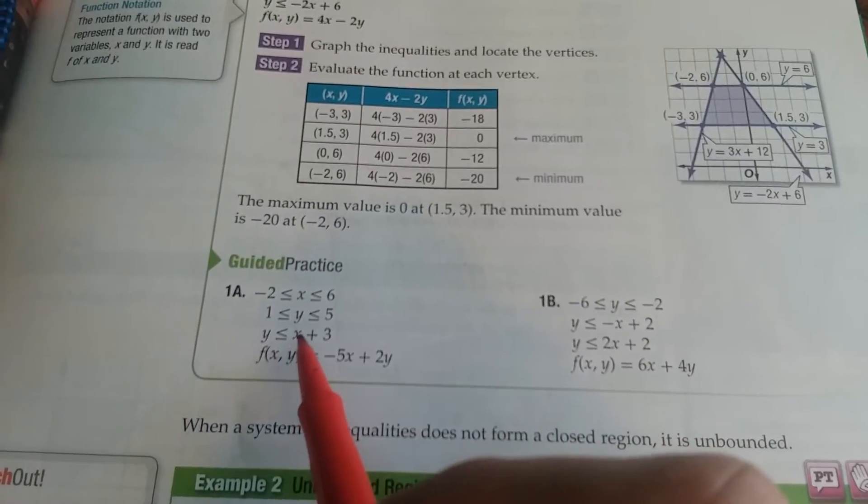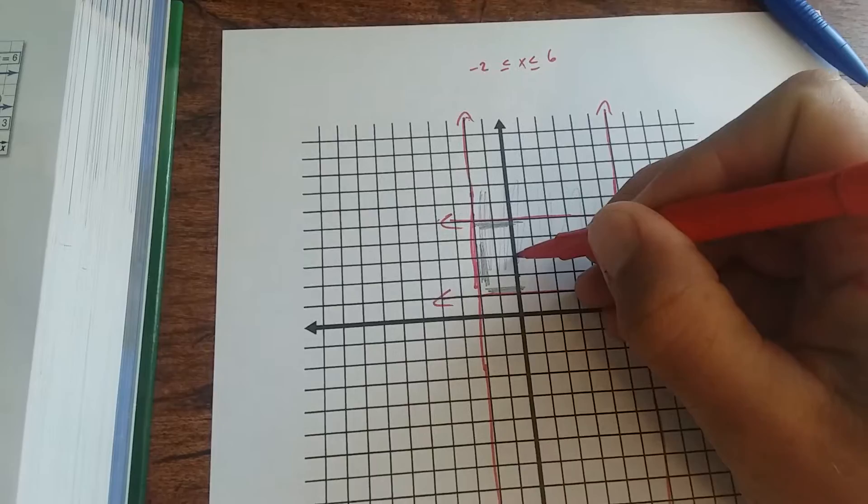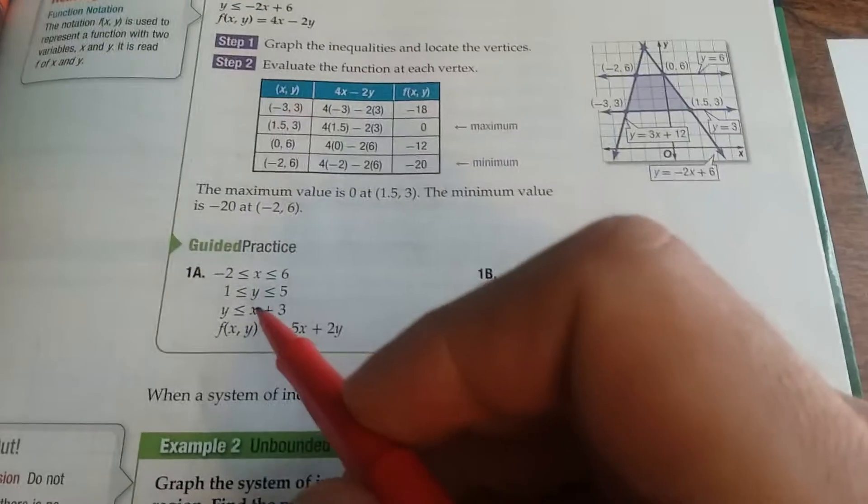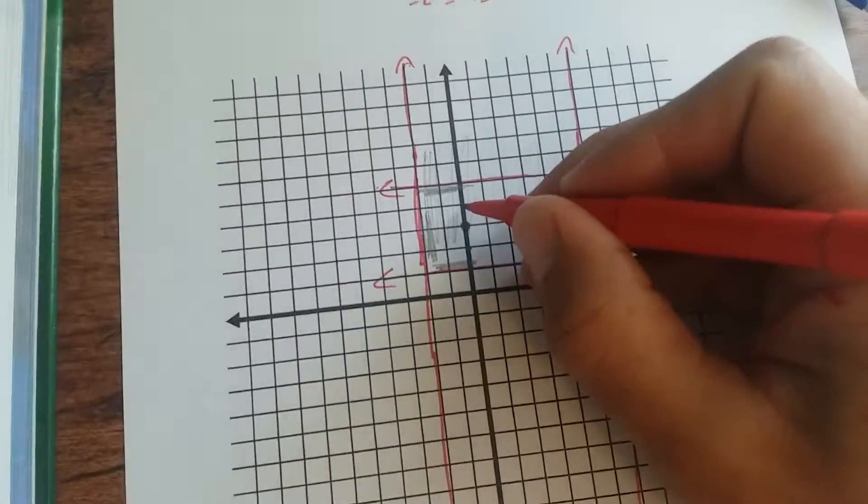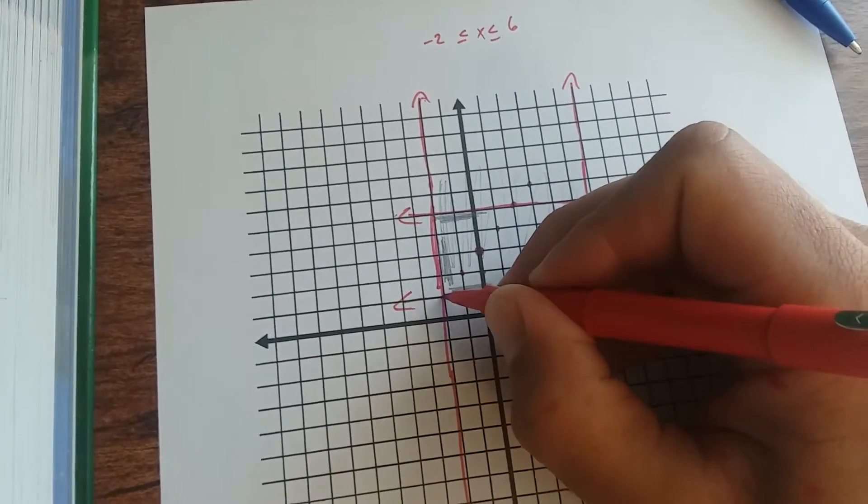And we have our last part: y is less than or equal to x plus 3. Your y intercept is 3: 1, 2, 3. Your slope is 1, so you're going to go up 1, over 1.